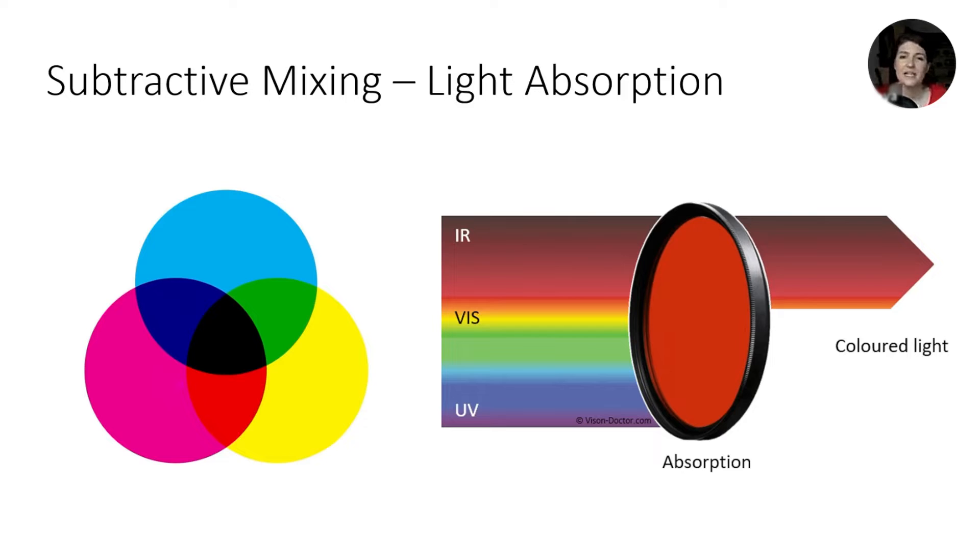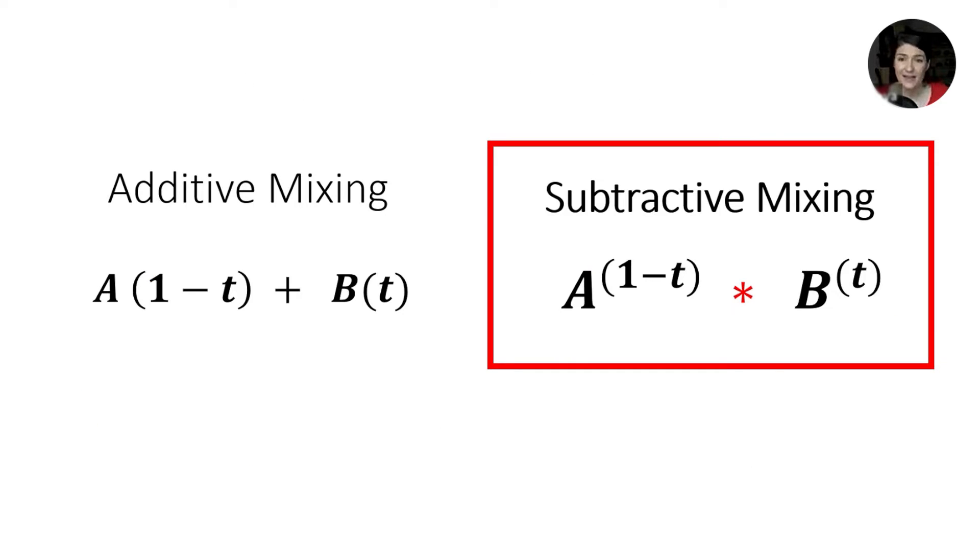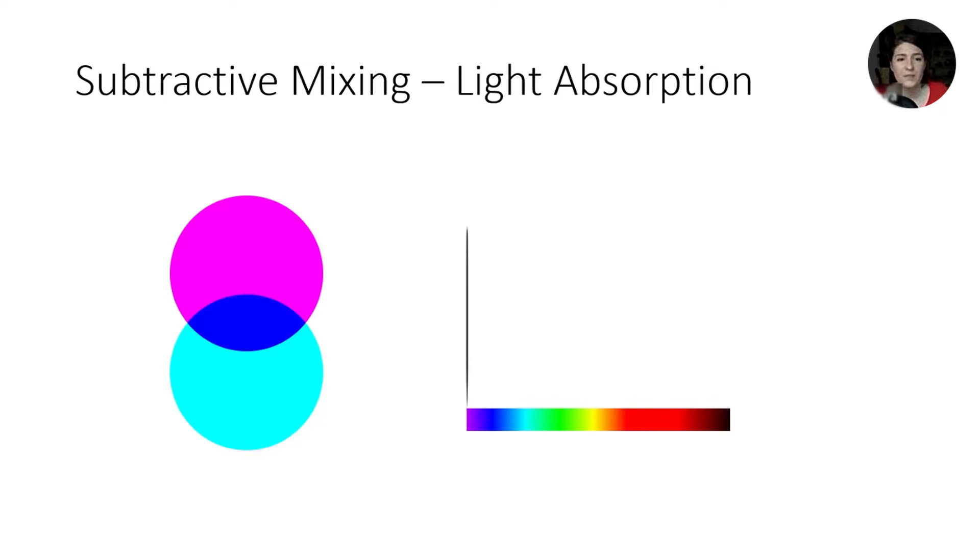Subtractive mixing models the absorption of light passing through colored filters. And this is kind of curious, but the algebraic operation for light absorption is multiplication, not subtraction. We're not subtracting anything here. The light spectra are multiplied during absorption. So here's just a quick example. We all know that magenta and cyan make blue in subtractive mixing, right? So this is the spectrum of magenta, and this is the spectrum of cyan. And the resulting blue spectrum is their intersection. It's a per-wavelength multiplication.